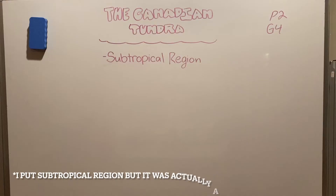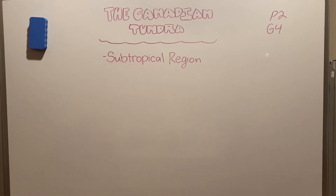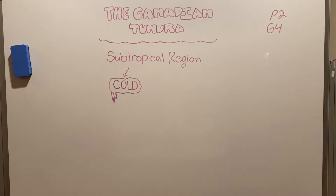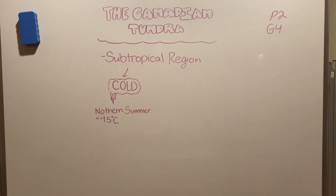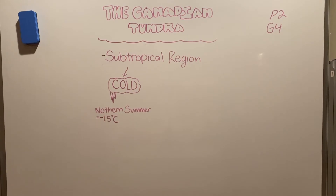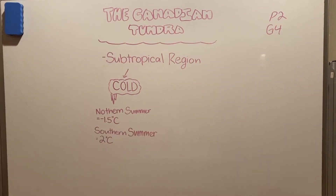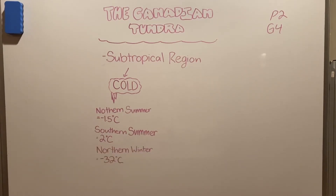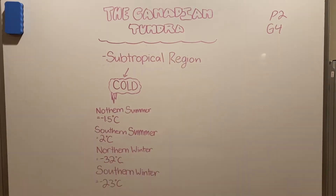First things first, the Canadian Tundra is a subpolar region, which means two main things. One, it's really cold. For northern summers, the temperature averages around negative 1.5 degrees Celsius, while for southern summers, the temperature averages around 2 degrees Celsius, a little bit warmer. However, during the winters, it can reach a blistering negative 32 degrees Celsius in the north and negative 23 degrees Celsius in the south.